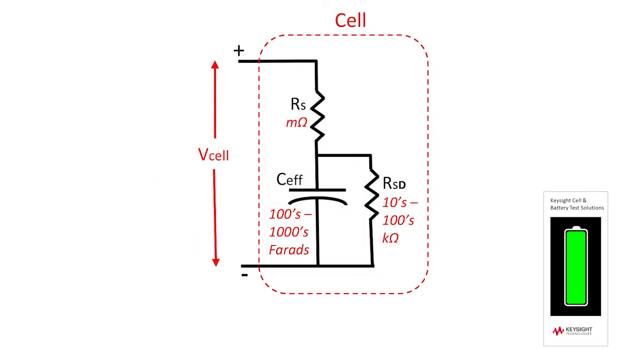Using a simple electrical model of a cell, we also showed how the self-discharge phenomena can be modeled as a resistance, R-sub-SD, in parallel with the effective capacitance of the cell. In this model, this self-discharge resistance is typically in the range of tens or hundreds of kilo-ohms.